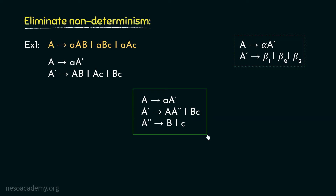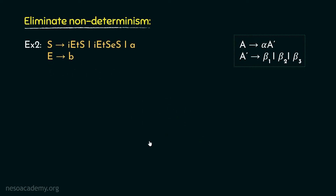Let's now move on to the next example. Consider this grammar: S can be rewritten as i, e, t, S — or i, e, t, S, e, S — or a. And e can be rewritten as small b. This production rule is pretty straightforward. However, the first two rules are the non-deterministic ones.